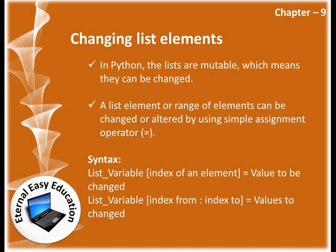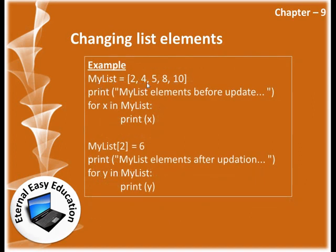See the example: my_list = [2, 4, 5, 8, 10]. To print the list elements before update, we use: for x in my_list: print(x). The for loop can be used to fetch elements in a list one by one. The output will print 2, 4, 5, 8, 10.